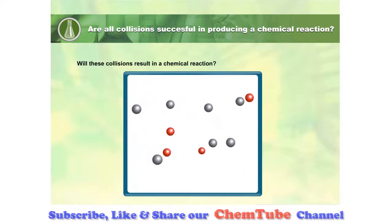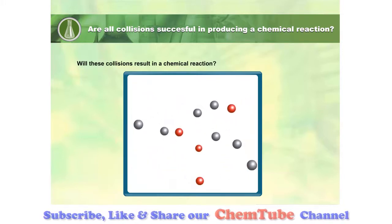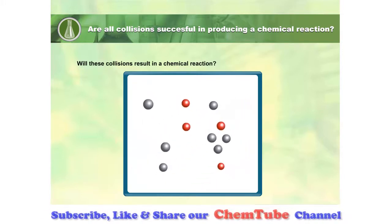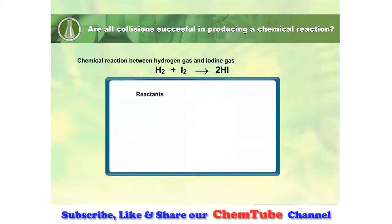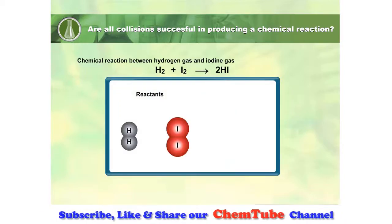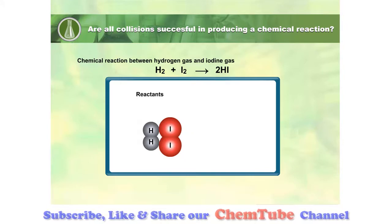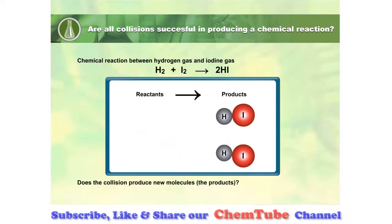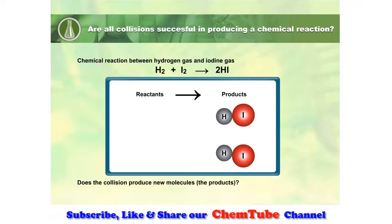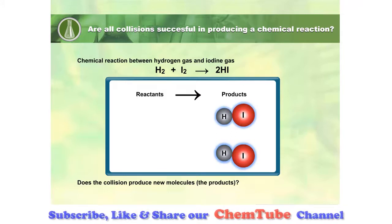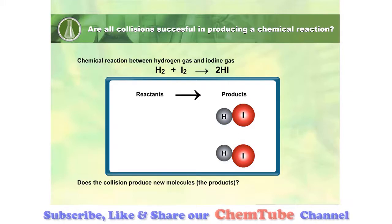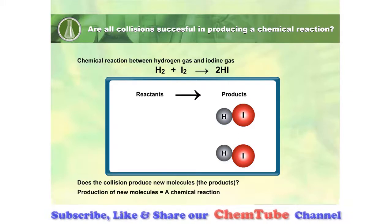Are all collisions successful in producing a chemical reaction? Let's look at the chemical reaction between hydrogen gas and iodine gas as an example. The collision produces new molecules, and the production of new molecules indicates that there is a reaction.